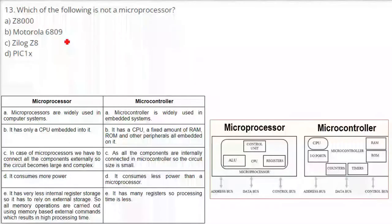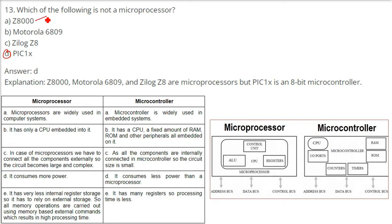Which of the following is not a microprocessor? PIC1 is a microcontroller — specifically an 8-bit microcontroller. But Z8000, Motorola 6809, and Zilog Z8 are all microprocessors. The last one — PIC1 — is the microcontroller. So the answer is PIC1.